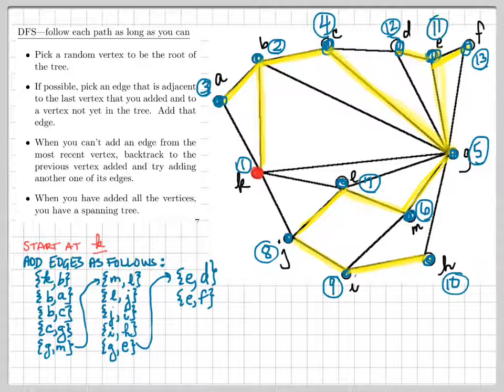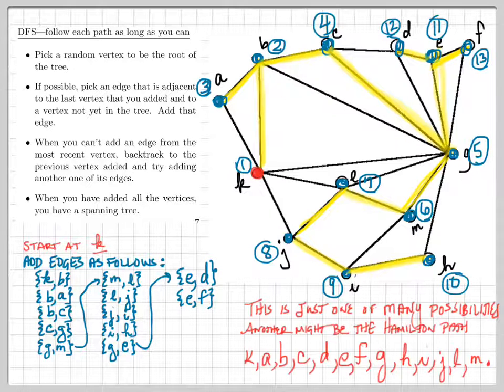Now there are many, many possible spanning trees that could result from a depth-first search. This just happens to be one where I wanted to illustrate this backtracking idea. You certainly could have, as your depth-first search tree, gotten lucky and ended up with the Hamilton path that starts out at K and simply traverses the whole graph by going A to B to C to D to E to F to G, and then I don't know where it goes after that, to H to I to J to L to M. That is also a perfectly fine depth-first search. But since it said that we're picking where we go sort of randomly, I wanted to implement it in a random sense. So there you have a depth-first search.